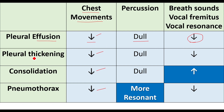Almost similar findings are present in pleural thickening: decreased chest movements, dull percussion, and decreased breath sounds, vocal fremitus, and vocal resonance. The key difference is that dullness in pleural effusion is stony, whereas in pleural thickening the dullness is not stony.